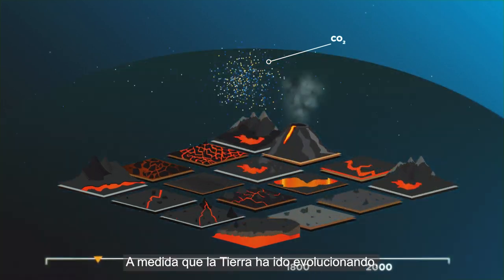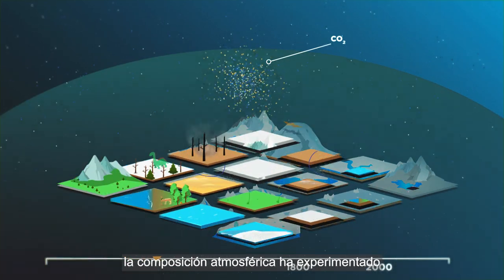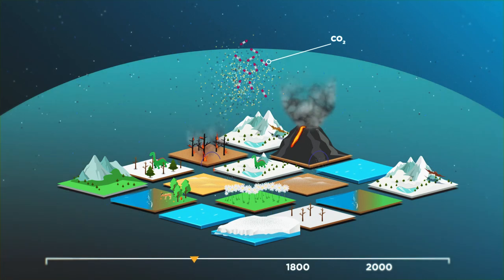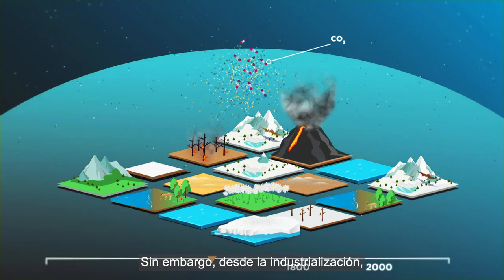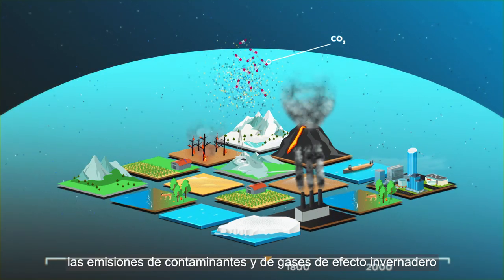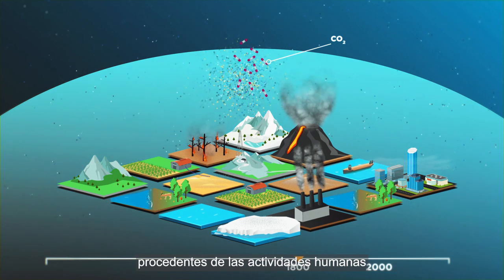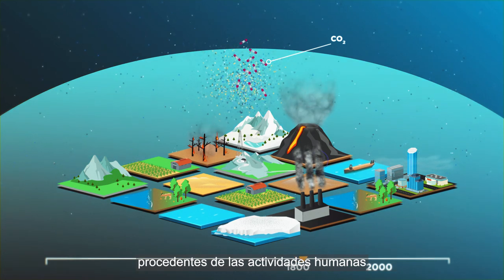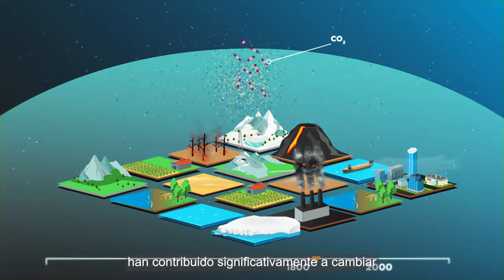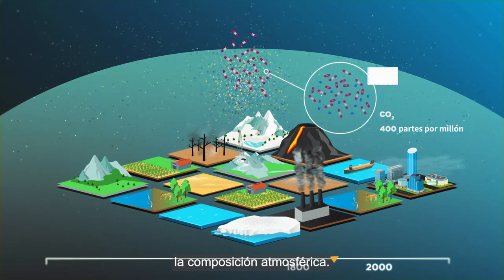As Earth has evolved, atmospheric composition has undergone many natural changes. But since industrialisation, emissions of pollutants and greenhouse gases from human activities have played a significant role in changing atmospheric composition.